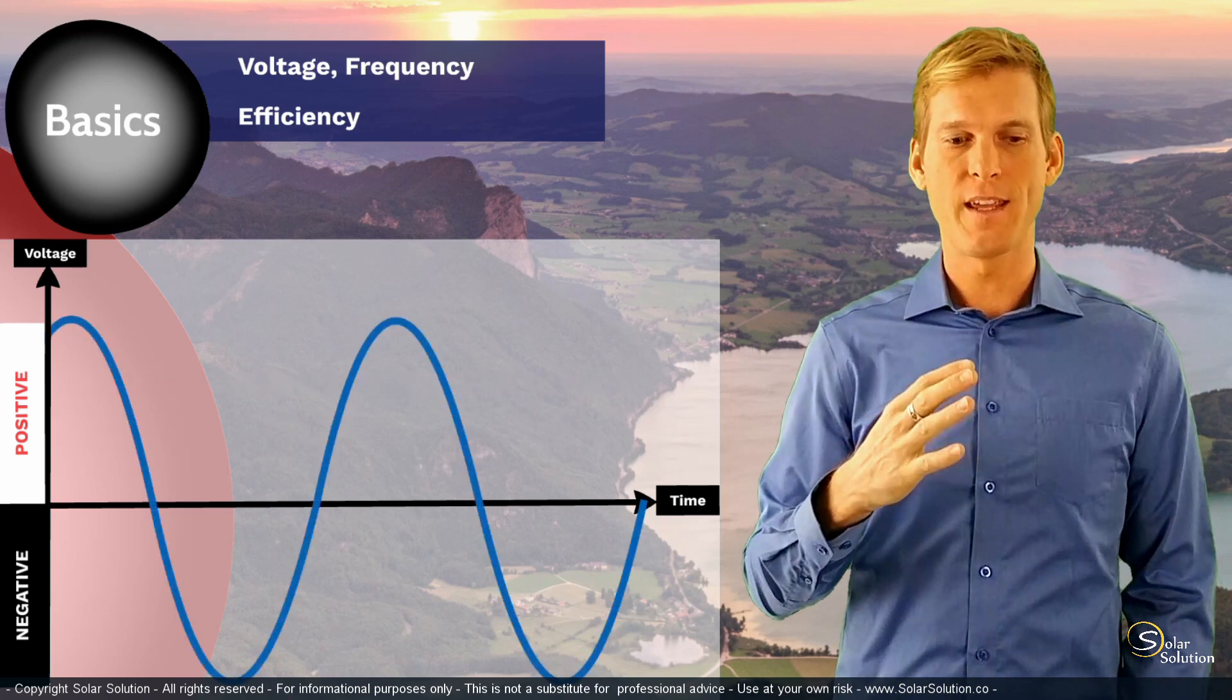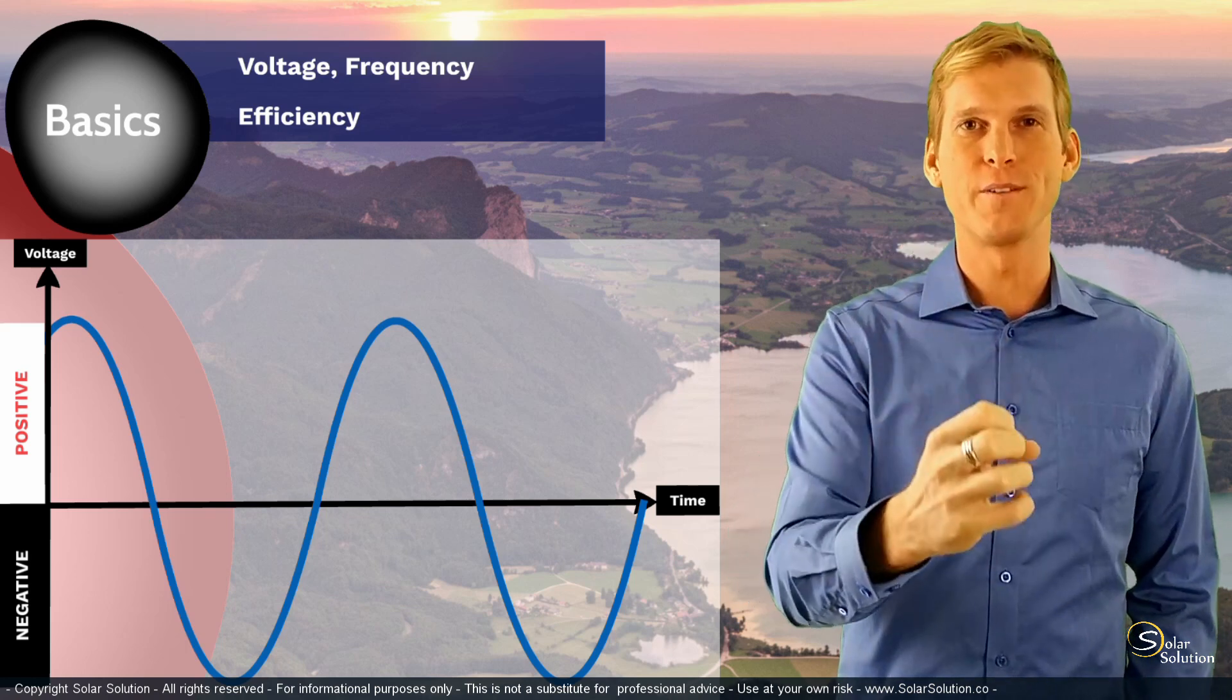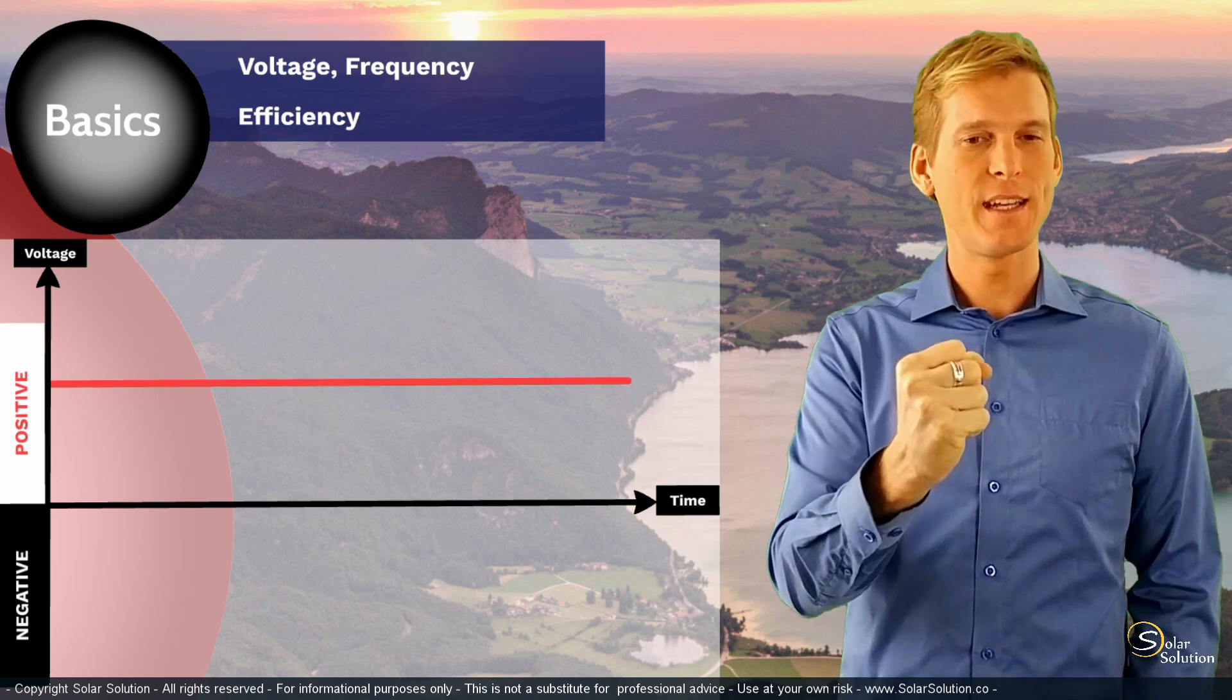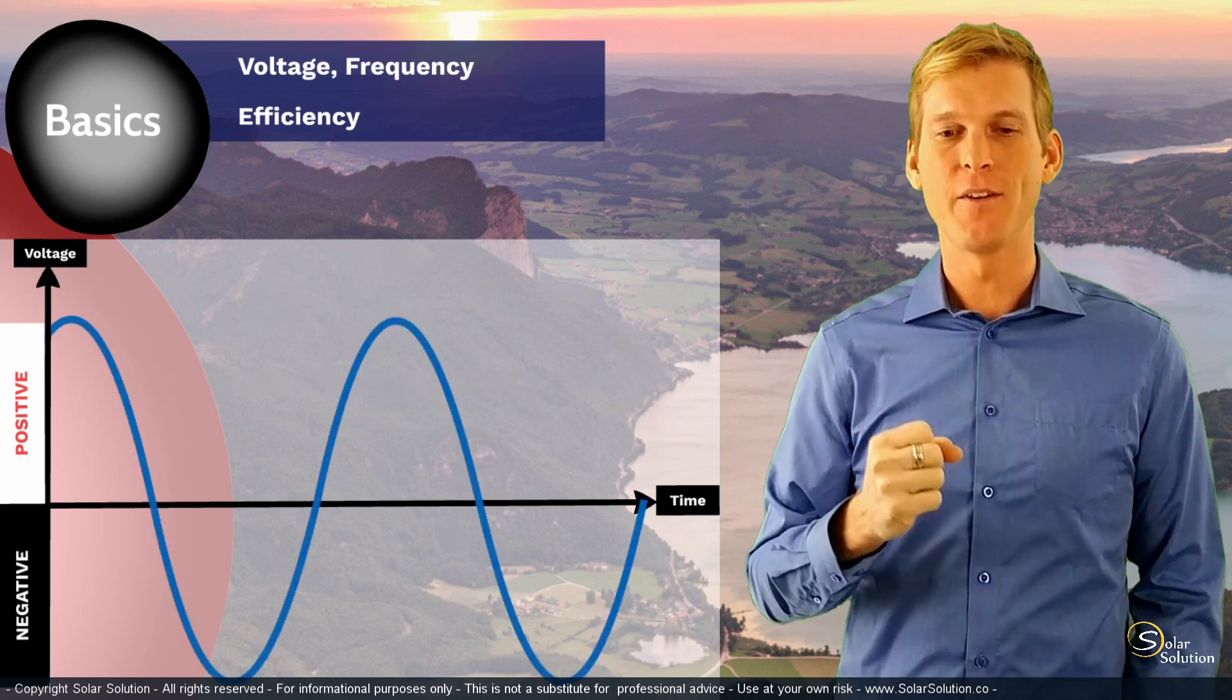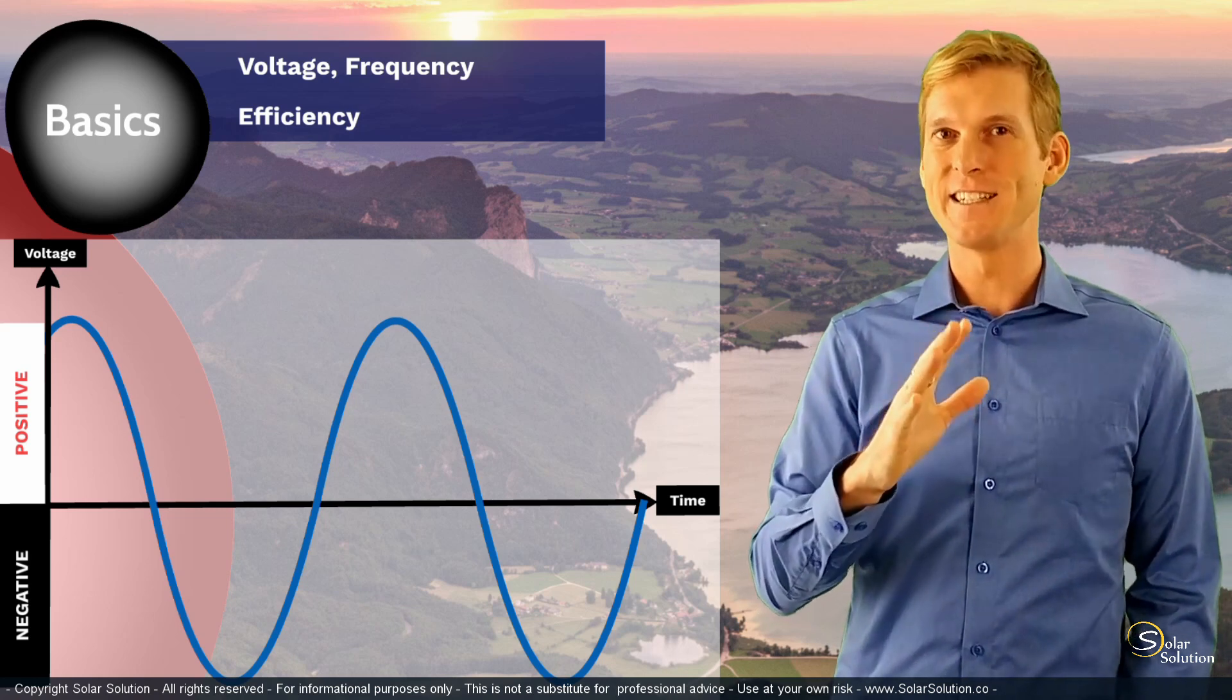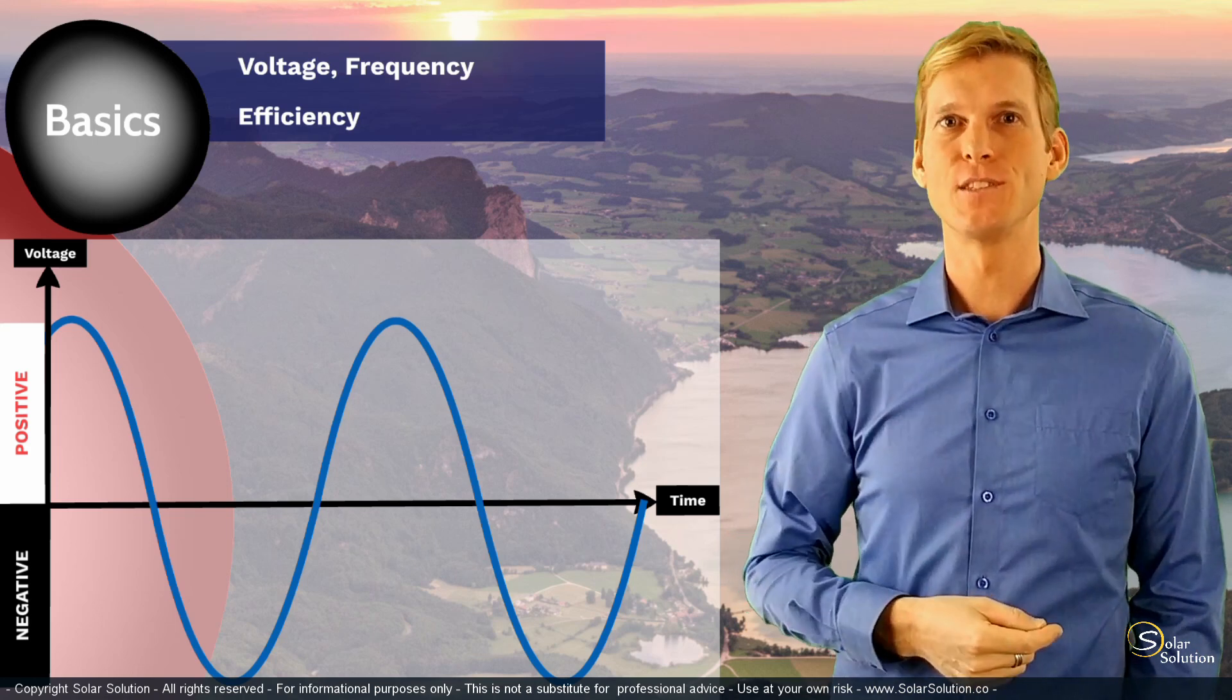A theoretical 100% efficient inverter would take all of the power from the DC source and convert all of that without any heat loss, any energy loss into an AC output. This 100% theoretical efficient inverter doesn't exist, but normally they range somewhere between 80 and 99% efficiency.